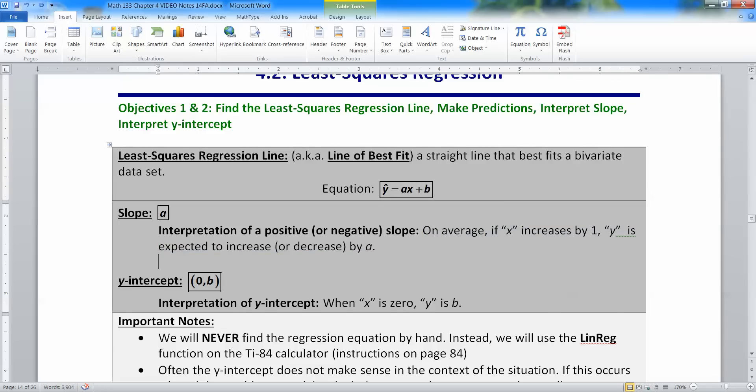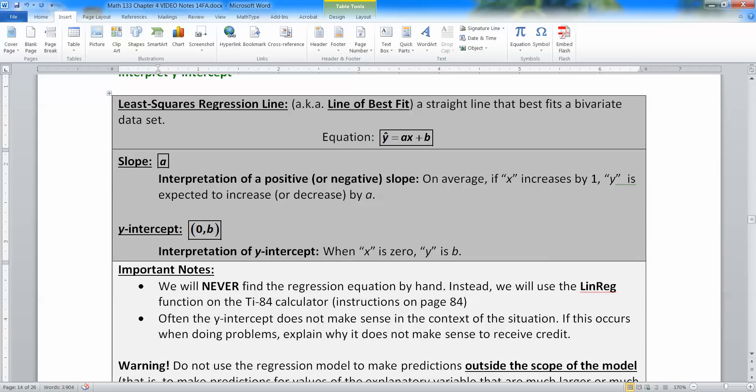So in other words, we're trying to be kind of squishy with that language in there. And then for the y-intercept, when x is zero, and again, x is in quotes because you're not really going to say x. You're going to say whatever it was in variable. The y is about, I should say, b. Because it's not exactly b. It's about b, or is expected to be. Expected to be about b.